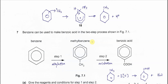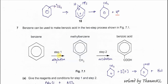Question 7: benzene can be used to make benzoic acid in a two-step process. To go from benzene to benzoic acid, we need to form methylbenzene first. In order to form methylbenzene, we need to use a carbocation. The benzene ring will react with this carbocation, form an intermediate, and eventually form methylbenzene with H+ released.